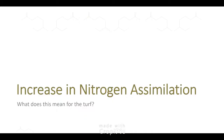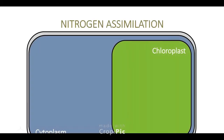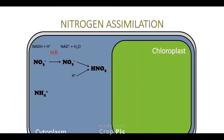So increase in nitrogen assimilation — what does this mean for the turf? This is really complex, and the only reason I have this stuff down in the slide is so you can see that I'm not making it up. Big picture is, whether you apply nitrate, whether you apply ammonium (NH4), or whether you apply urea — which eventually turns into ammonium — it all turns into ammonia in the chloroplast.